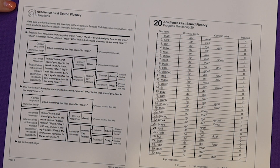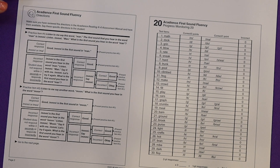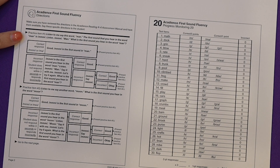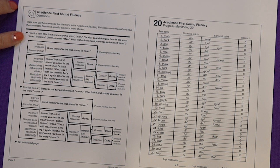This is the ACADIANS First Sound Fluency subtest. Listen to the directions: Listen to me say this word — man. The first sound that you hear in the word man is mm. Listen, mm, man. What is the first sound you hear in the word man?